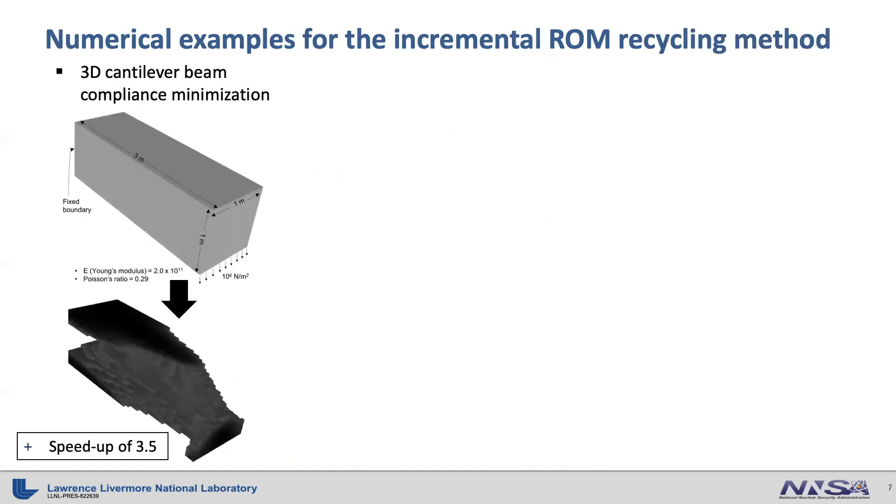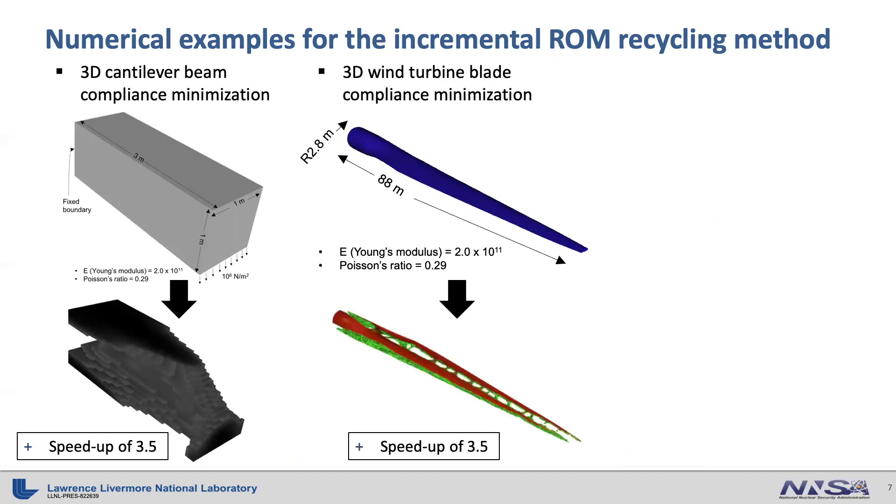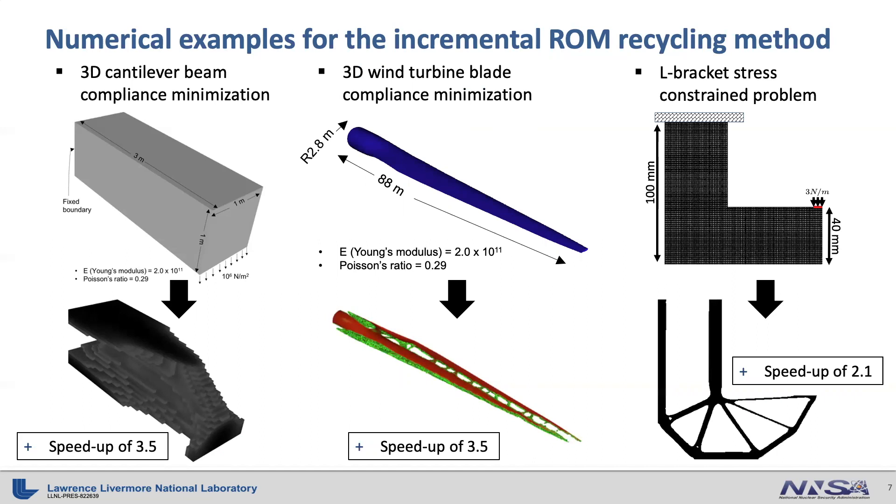We have applied this incremental reduced order model recycling method to many different density-based topology optimization problems. The first numerical example is 3D cantilever beam compliance minimization problem, where we achieve a speedup of 3.5. The second example is 3D wind turbine blade internal structure compliance minimization problem. Here, we achieve a speedup of 3.5 again. Finally, we solve the 2D L bracket stress-constrained problem, where a speedup of 2.1 is achieved by the reduced order model.